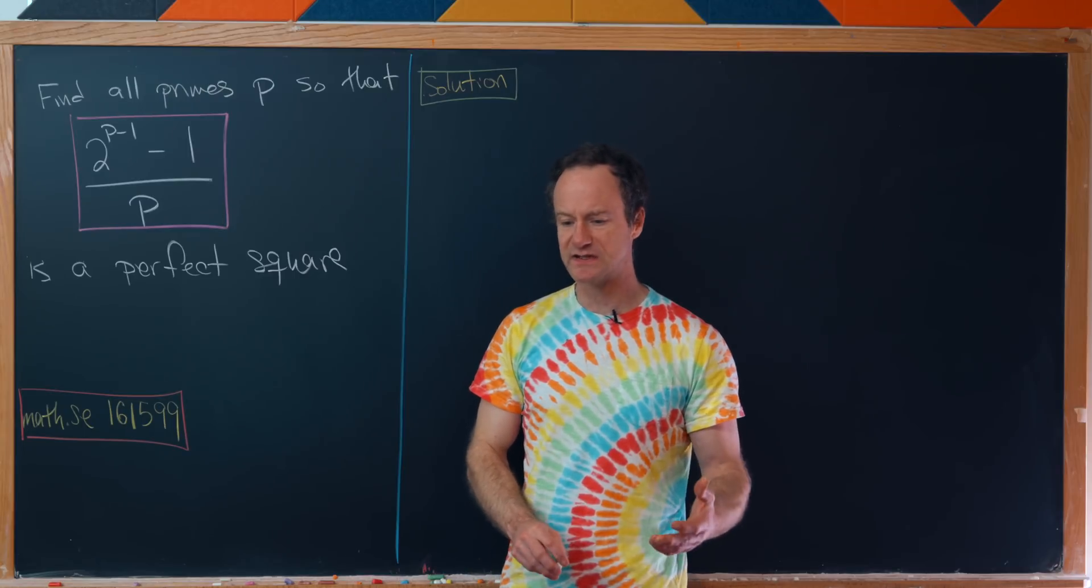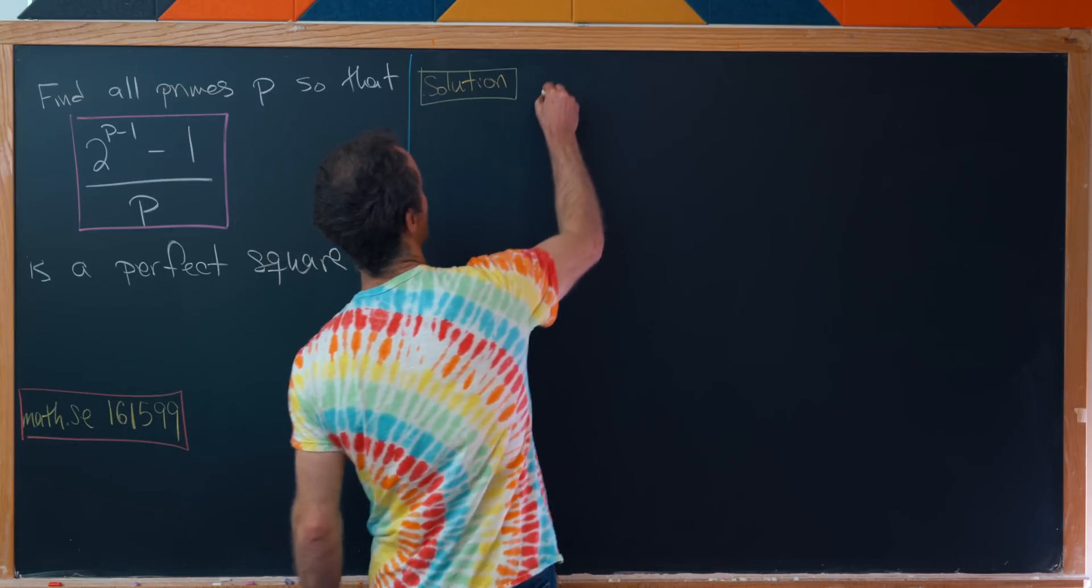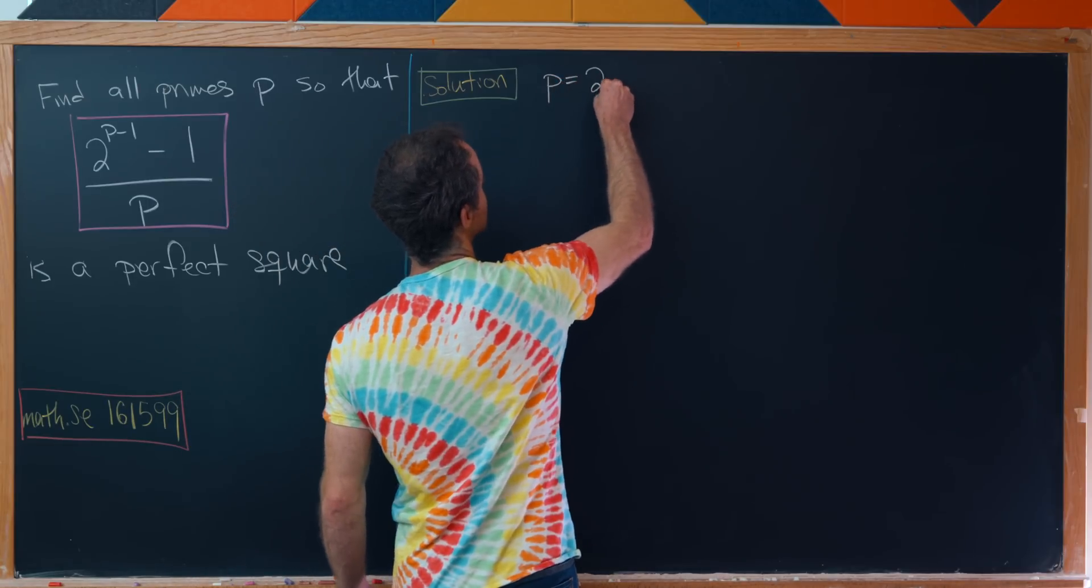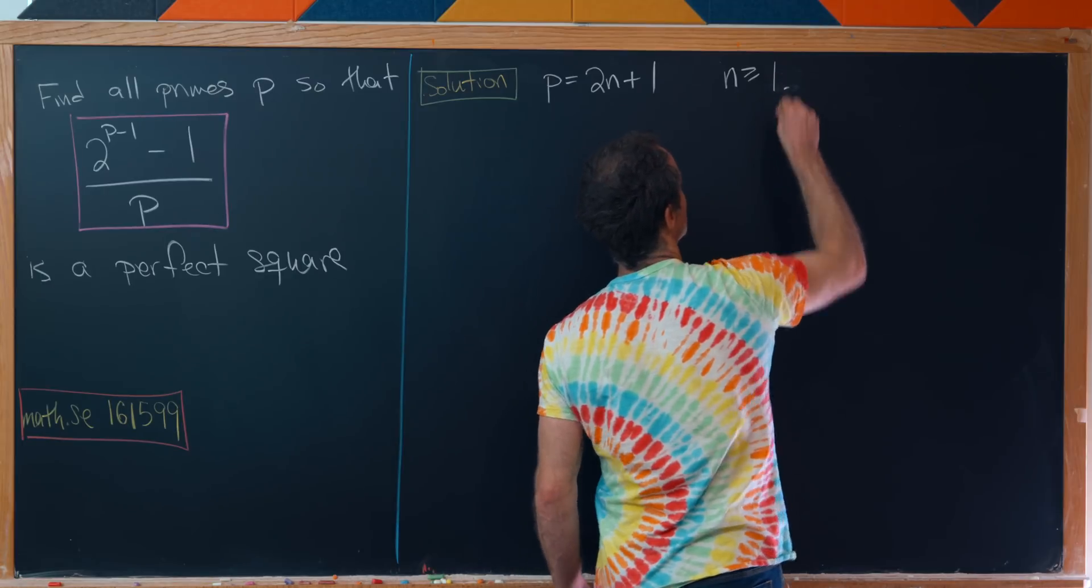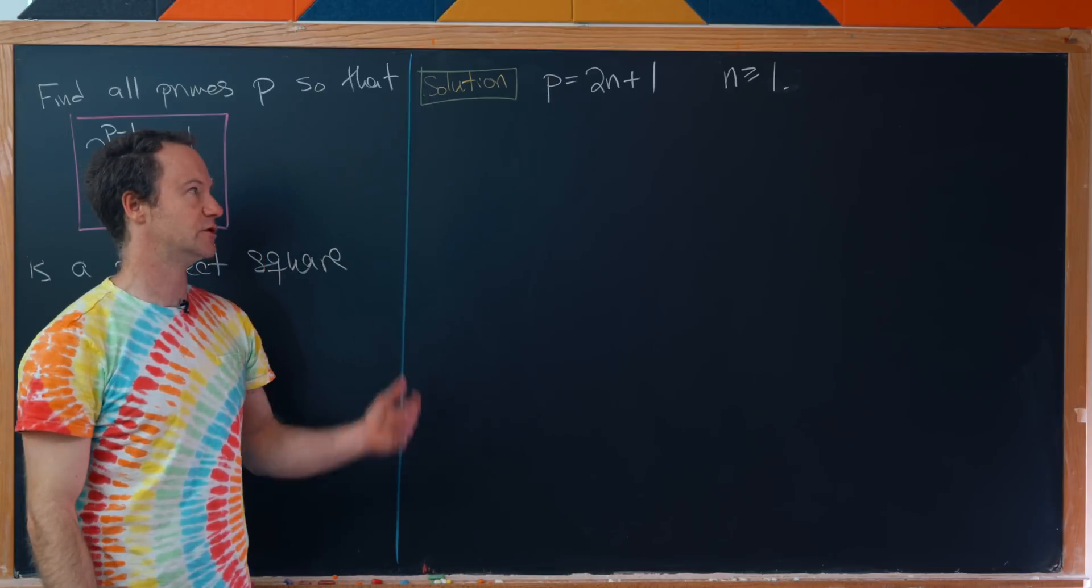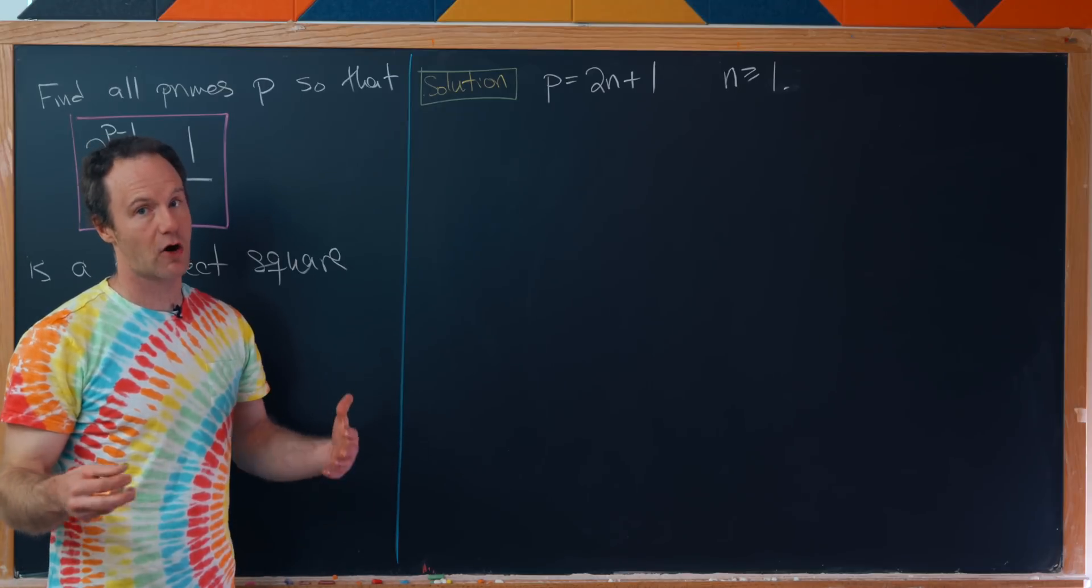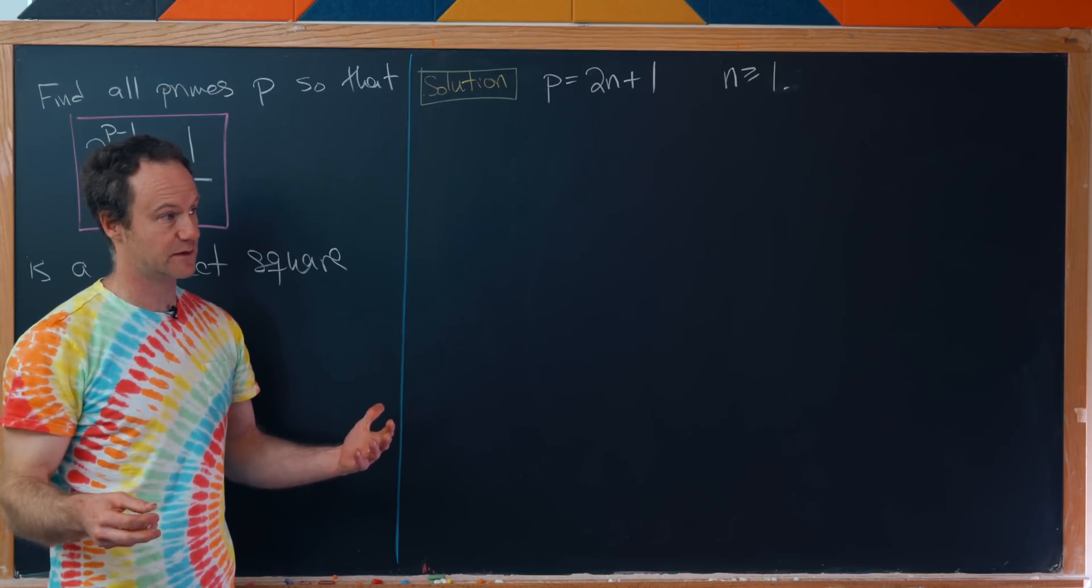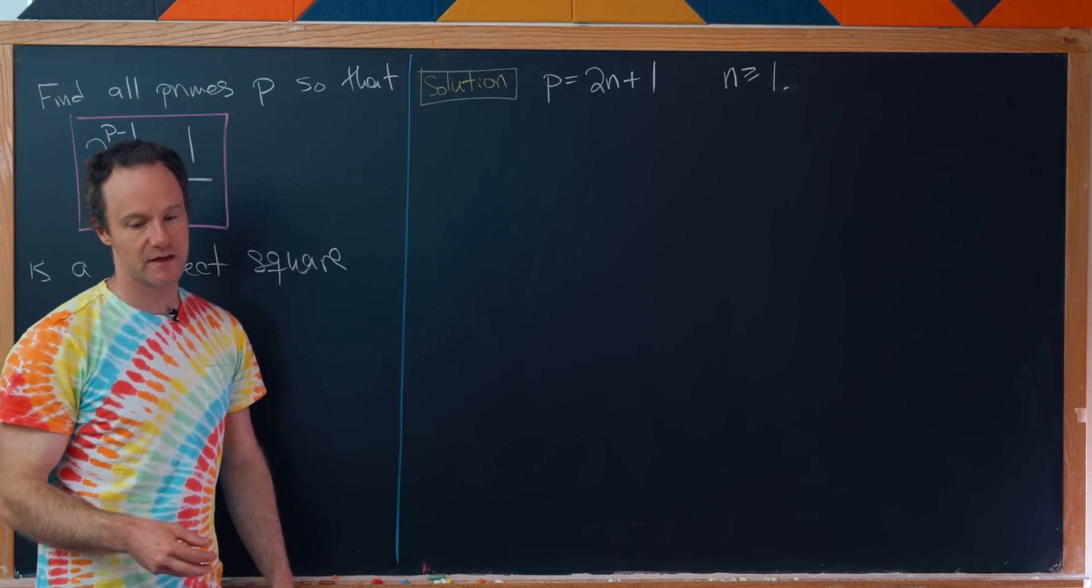That means p must be an odd prime. If p is an odd prime we can write p as 2n+1 where n is bigger than or equal to 1. Notice n equals 1 gives us the prime 3, n equals 2 gives us the prime 5, and so on.